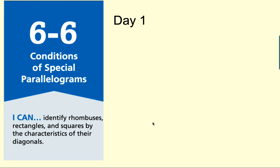Hello Gators, this is 6-6, Conditions of Special Parallelograms, Day 1. I can identify rhombuses, rectangles, and squares by the characteristics of their diagonals.